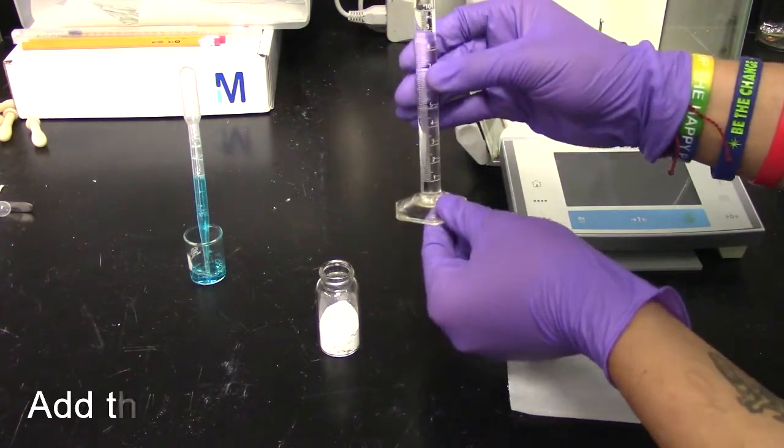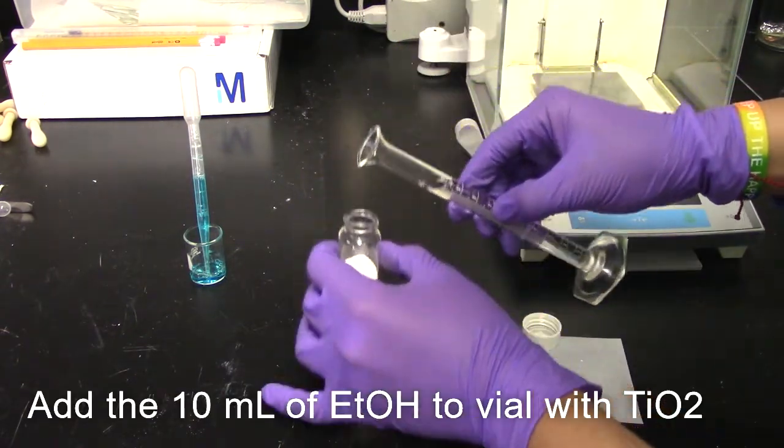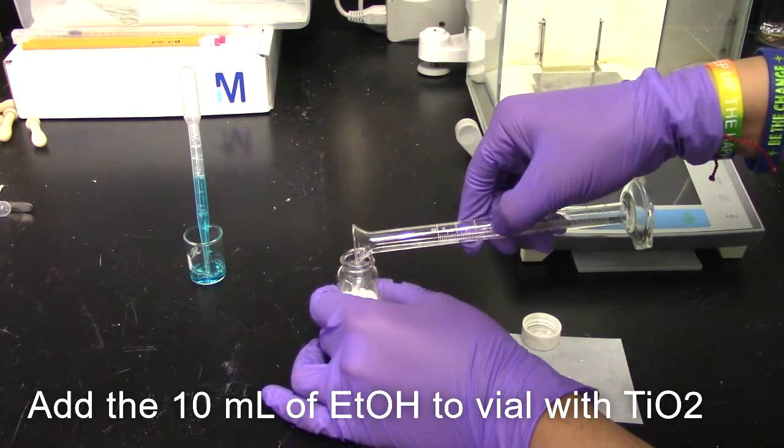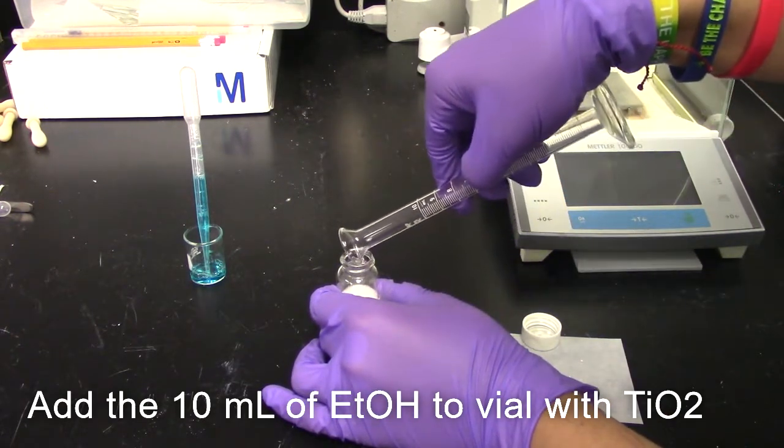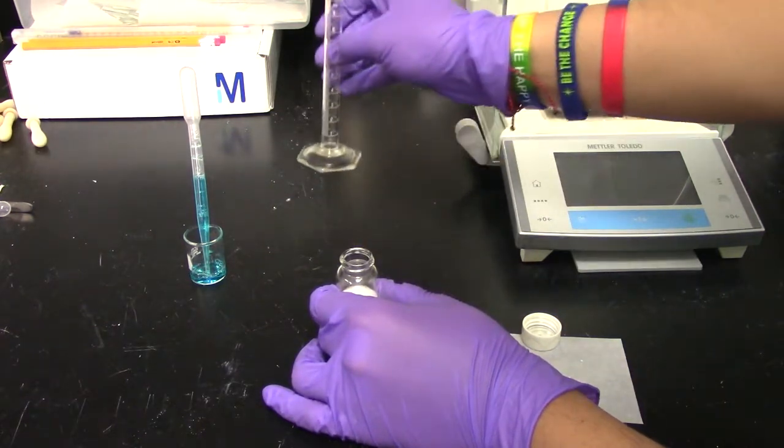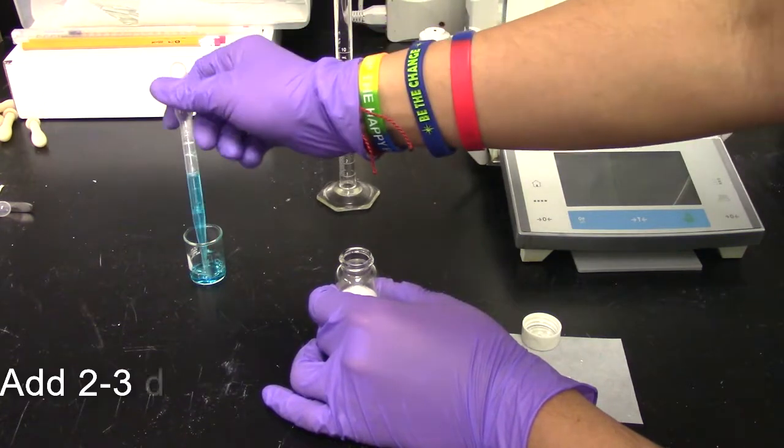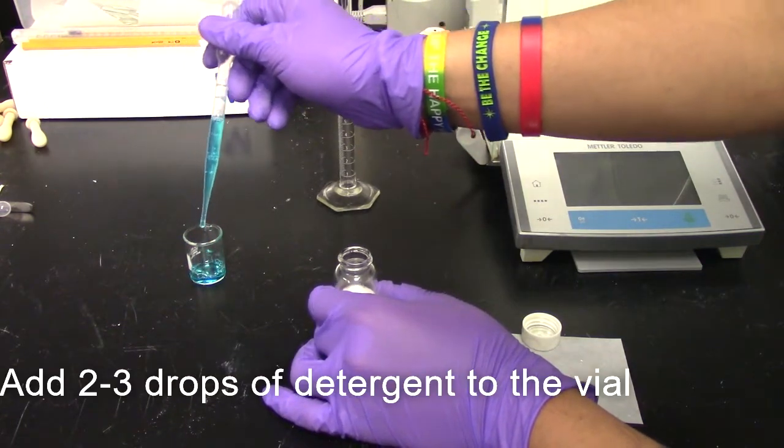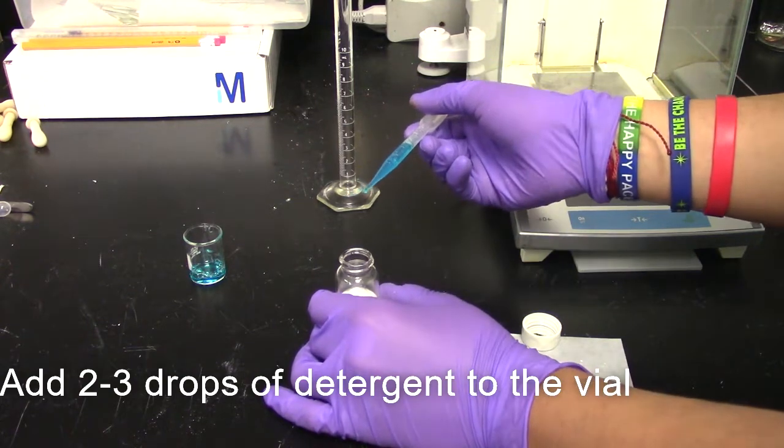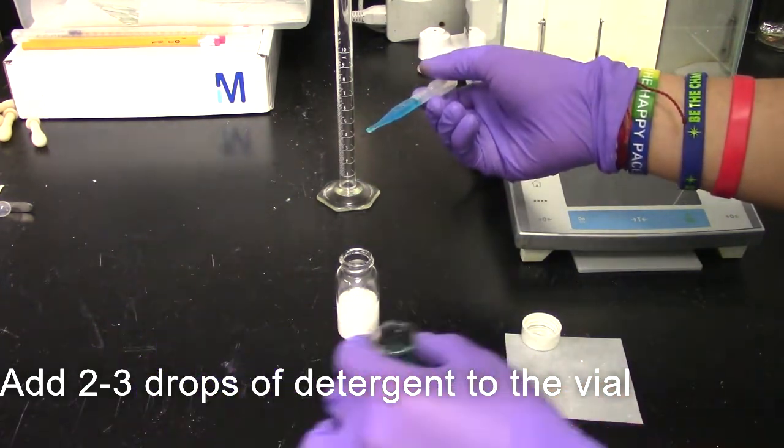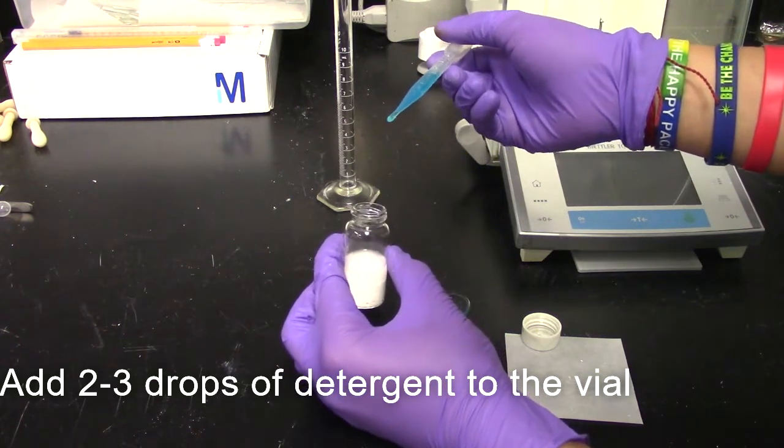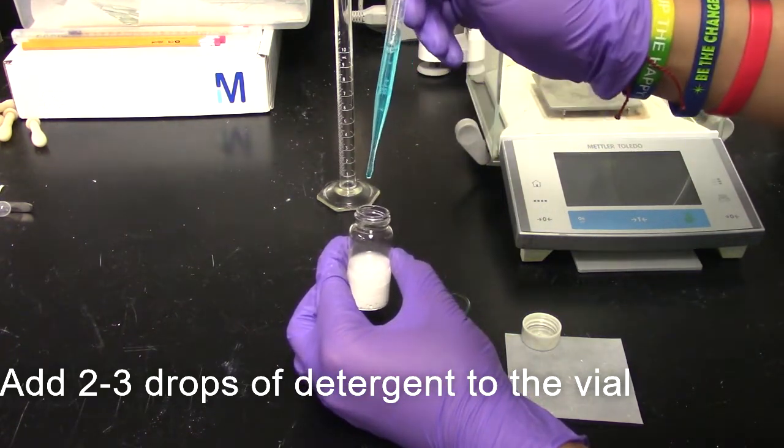Take the pre-measured 10 milliliters of ethanol and add it to the vial with the pre-weighed TiO2 powder. Add 2 to 3 drops of detergent to the vial with the TiO2 powder and ethanol. The detergent used in this video was simple Dawn dish detergent.